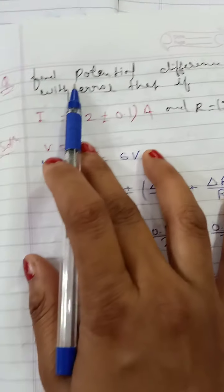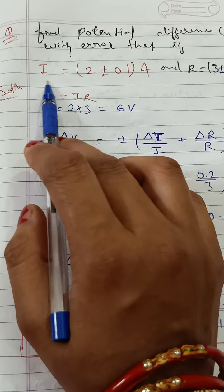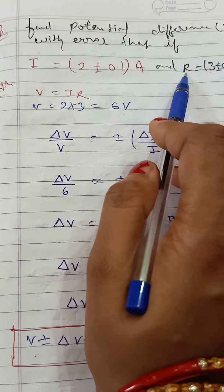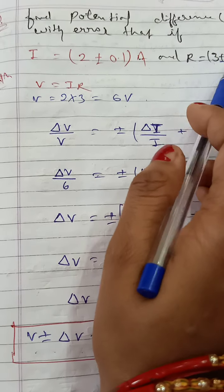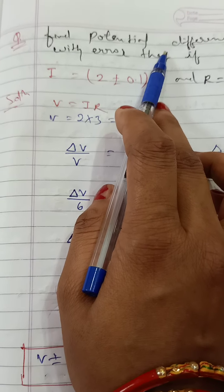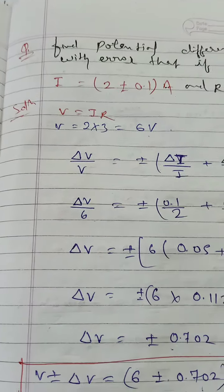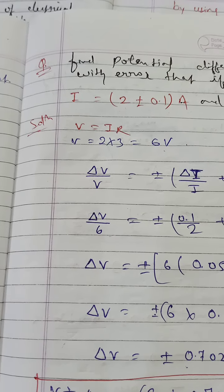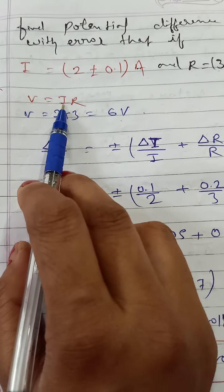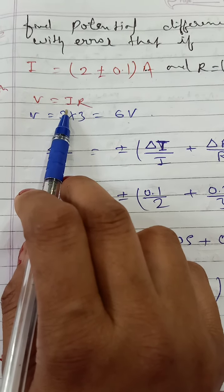Now let's see an example. Find the potential difference v with error, given that electric current i equals 2 plus minus 0.1 ampere, and resistance r equals 3 plus minus 0.2 ohm. To find potential difference, we use Ohm's law: v equals i·r. Since this is a product of i and r, we apply error in multiplication.